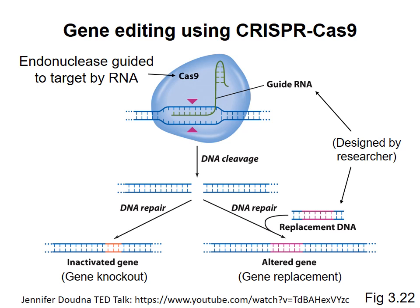Now in practice, the specificity of CRISPR is reduced from what is theoretically possible because the system is tolerant of a few mismatches between the guide RNA and the target site. After Cas9 has made a double-strand break in the genome, the organism's double-strand break repair machinery will try to fix the break.